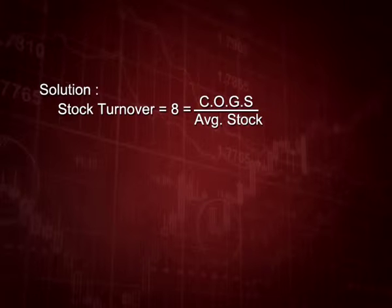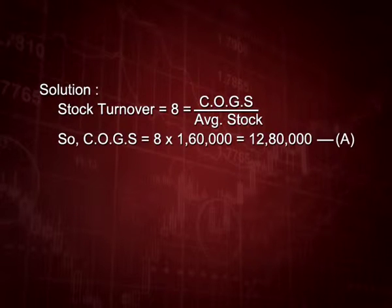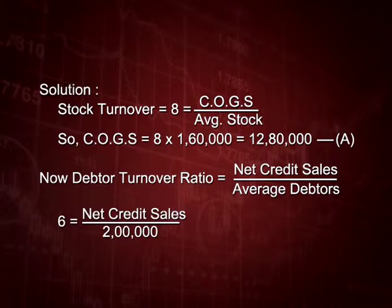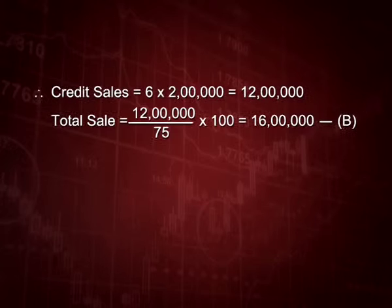Starting with stock turnover: 8 equals cost of goods sold upon average stock. Average stock is 1 lakh 60 thousand, so cost of goods sold is 12 lakh 80 thousand (take it as A). For debtor turnover: 6 equals net credit sales upon average debtors of 2 lakh, so credit sales equal 12 lakh. Total sales equal 12 lakh divided by 75, multiplied by 100, giving 16 lakh (take it as B).